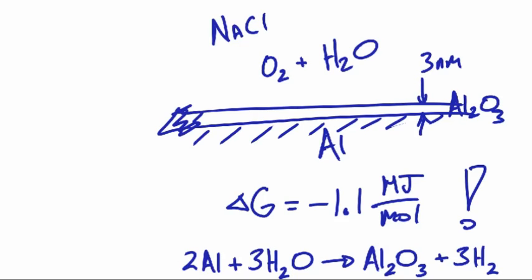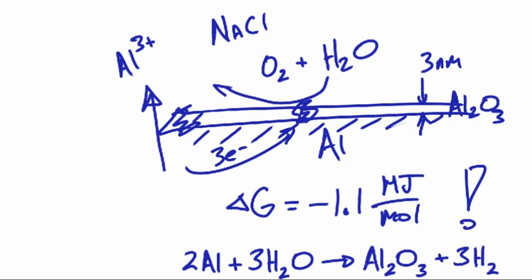Now if those conditions are met, the aluminum can dissolve away as aluminum plus 3. The aluminum loses those 3 electrons, the 3 electrons go off someplace else, and they find another defect so they can pass through the film. And they combine with the water and the oxygen and they form hydroxyls.